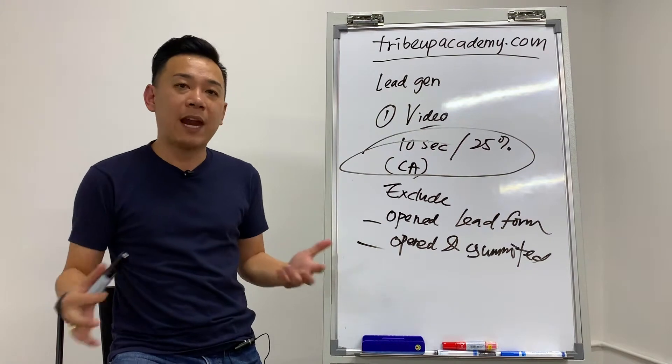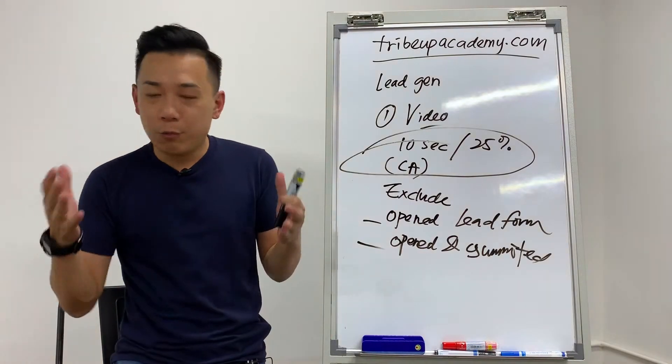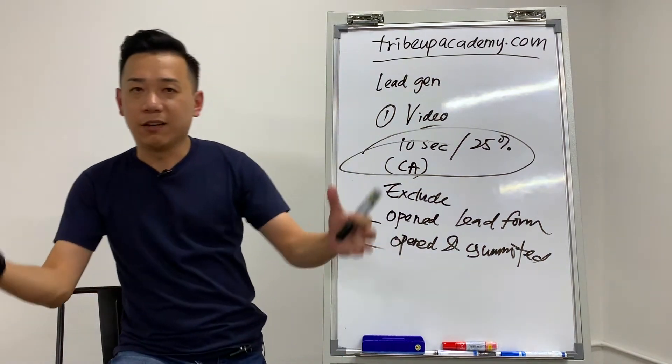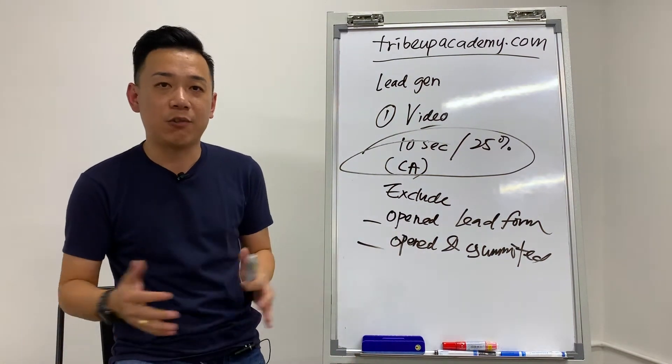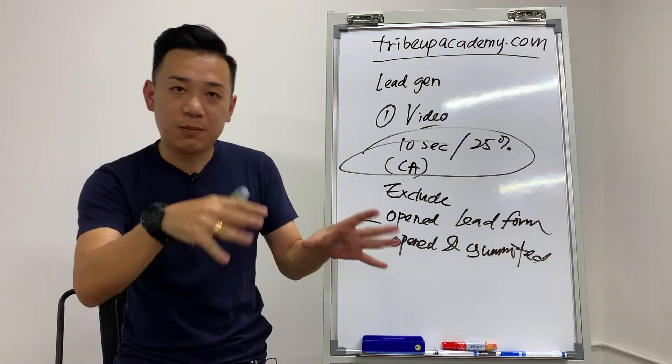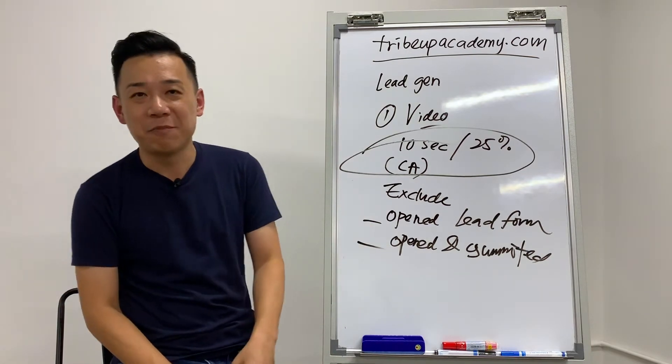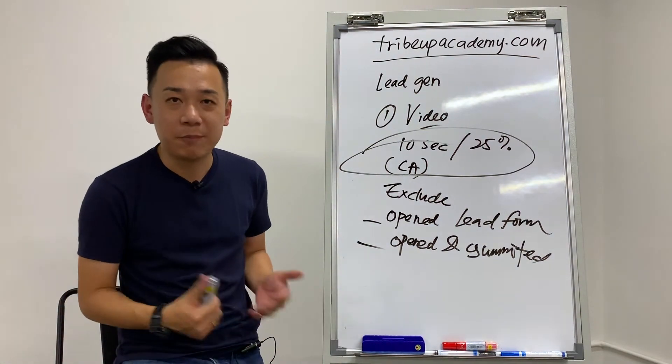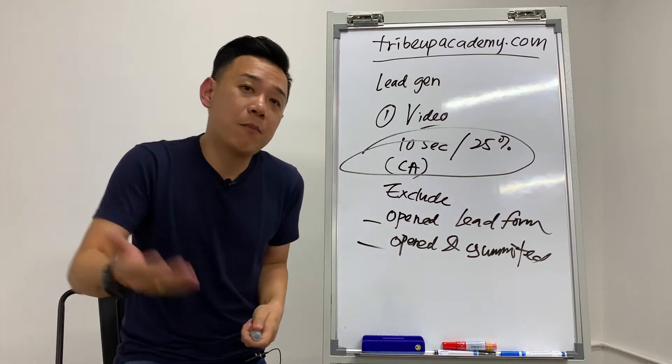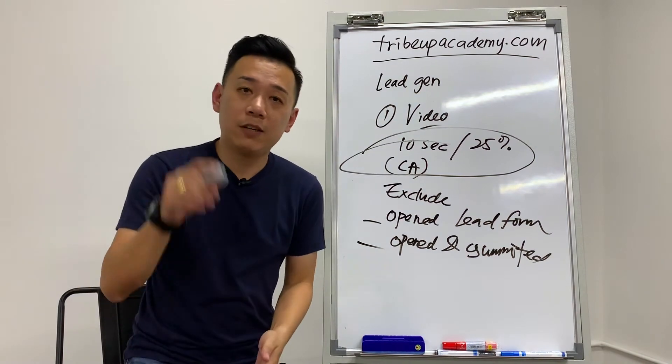If you're interested to find out more, you can actually visit tribeupacademy.com, which is here, because we have a class that teaches you exactly how to do this for your campaign. We will actually walk you through step by step, click by click, to make sure that you master this exclusion, inclusion, intent-based targeting techniques. The class is open right now. You can sign up at tribeupacademy.com. We have already put the link in this post. Alternatively, if you have a company and a business that you need help with, you want us to come in and help you strategize this, you can also contact us. Just drop us a message and we will get in touch with you. I'll see you in the next video. Thank you.